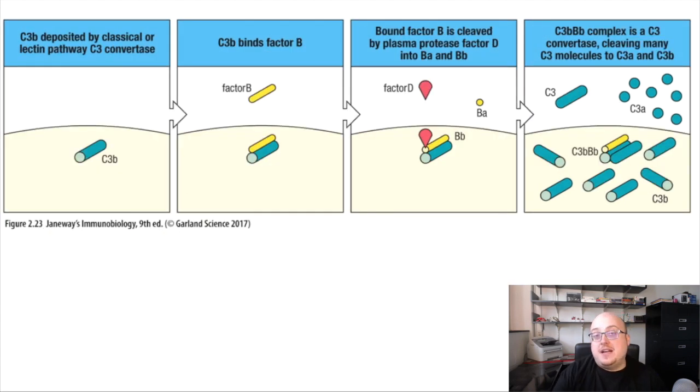One of the ways that the alternative pathway functions is to co-opt or take advantage of C3B that has already been generated by the other two pathways. So remember, when we make a C3 convertase, we make a lot of C3B. That C3B can then be bound by a molecule associated with the alternative pathway called factor B. Factor B binds specifically to C3B, and C3B stabilizes factor B such that it's able to bind to a second molecule of the alternative pathway called factor D. So as a general rule, the proteins with numbers are associated with the classical and lectin pathways. These new molecules we're introducing that have letter names, like factor B or factor D, these are associated with the alternative pathway.